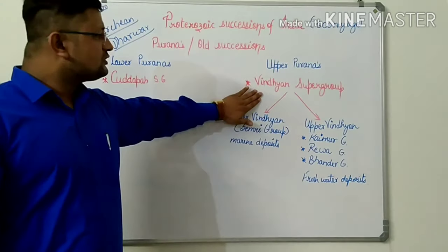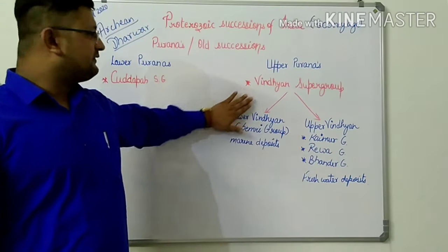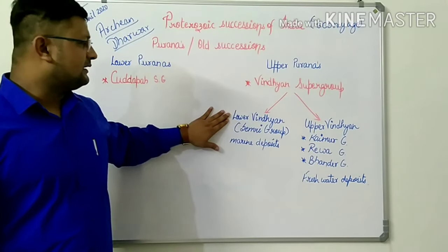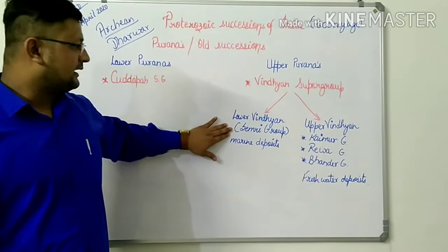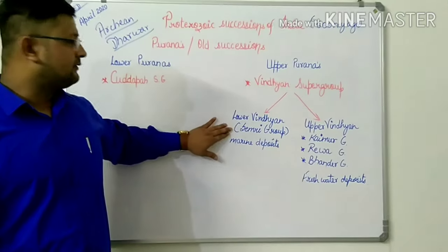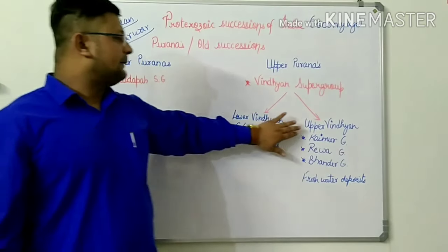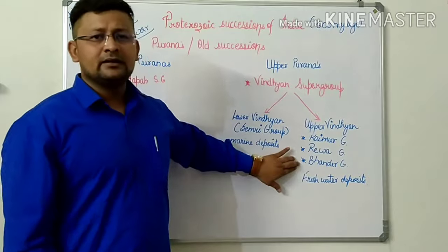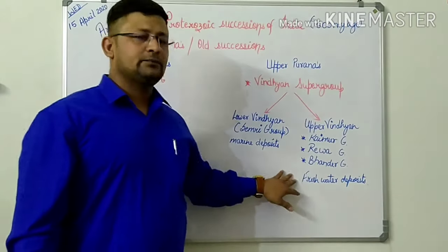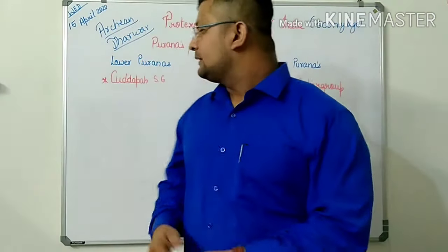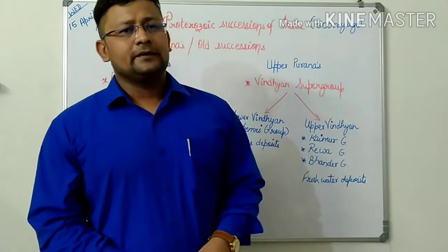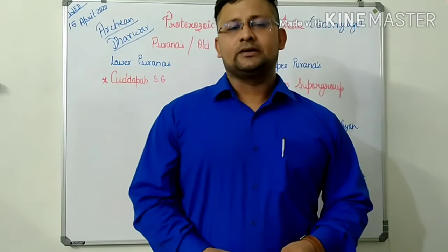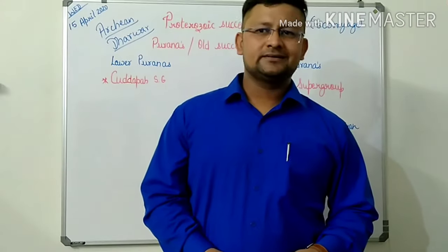In the lower Puranas we have the Kadappa Supergroup, and in the upper Puranas we have the Vindhyan Supergroup. The Vindhyan Supergroup is further divided into lower Vindhyan and upper Vindhyan. The lower Vindhyan comprises the Semri Group, with marine deposits. The upper Vindhyan comprises Kaimur, Rewa, and Bhandir, with freshwater deposits. The rocks of the Vindhyan are very important from an economic point of view in India.